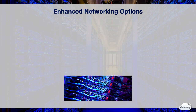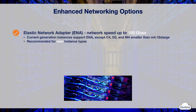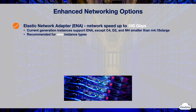AWS offers two enhanced networking options: ENA and Intel VF interface. Elastic Network Adapter, or ENA, can provide network speeds up to 100 gigabits per second. You can enable ENA on most current-generation EC2 instances, except for C4, D2 instance types, and M4 instances smaller than M4.16xlarge. ENA is recommended for new instance types.